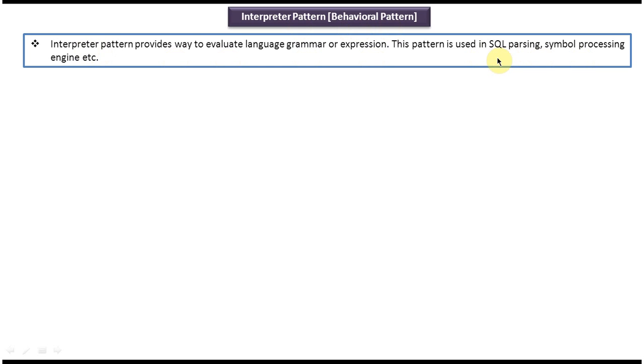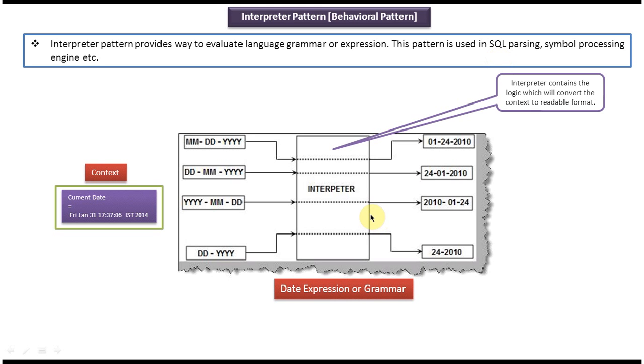I will show a diagram so that you will understand this explanation very clearly. Here you can see the context. Context has the value which you want to interpret. So here context has the current date which you want to interpret, and here you can see the different date expressions.